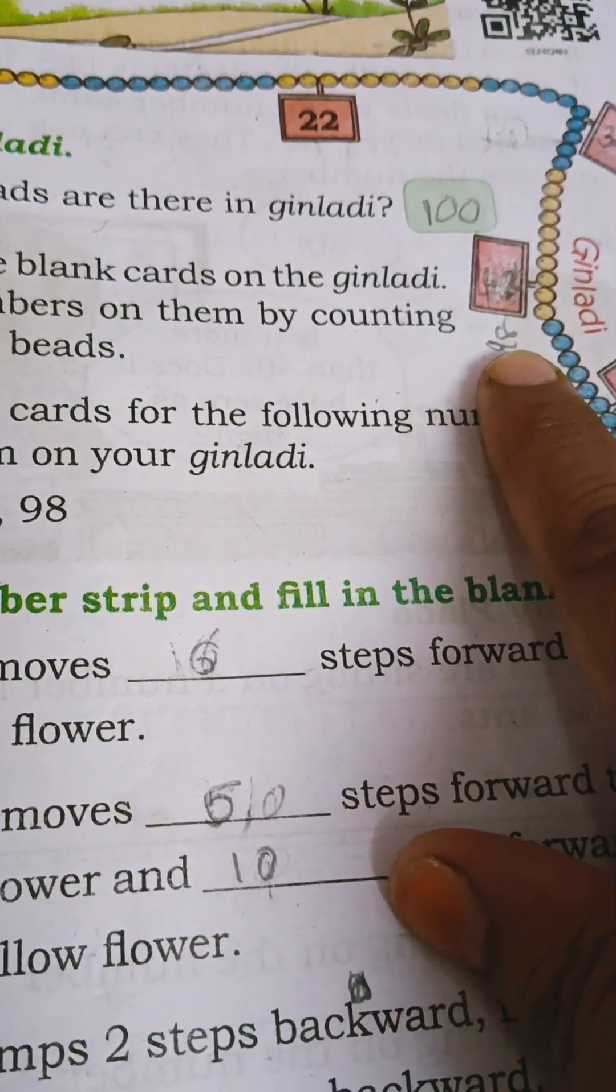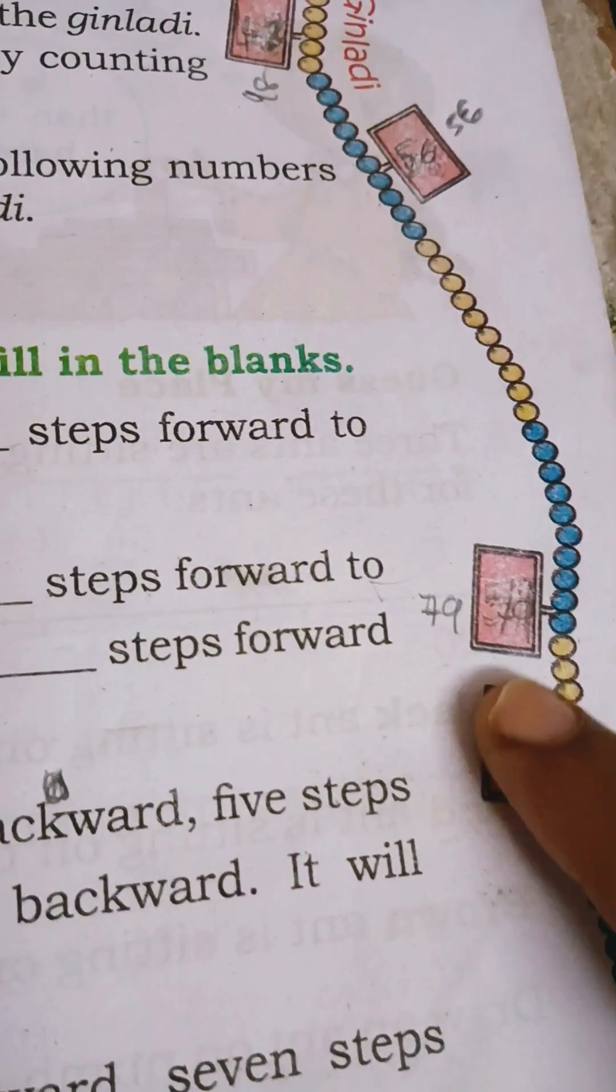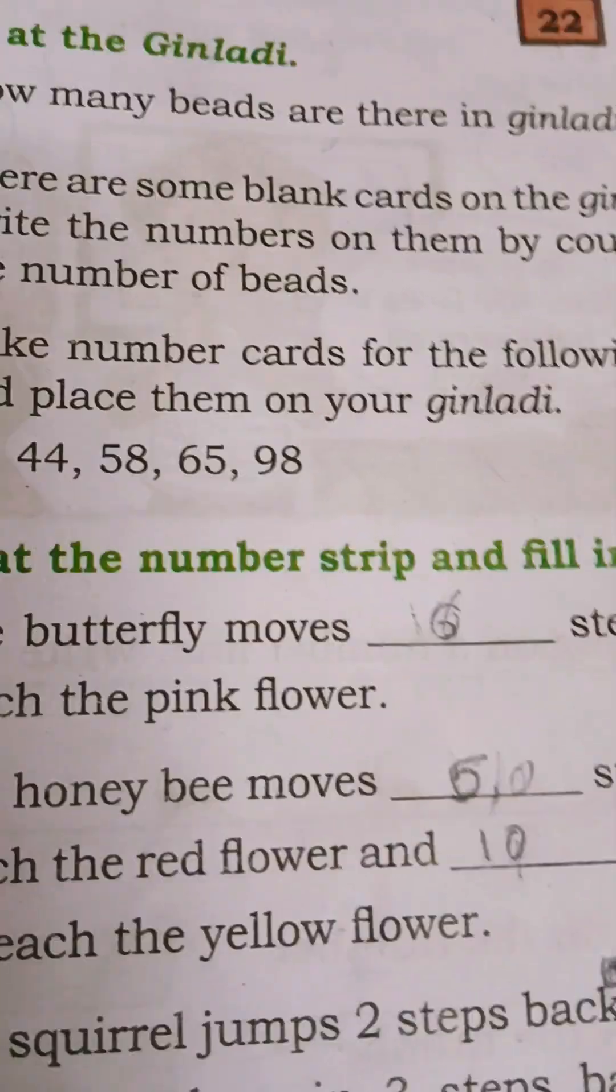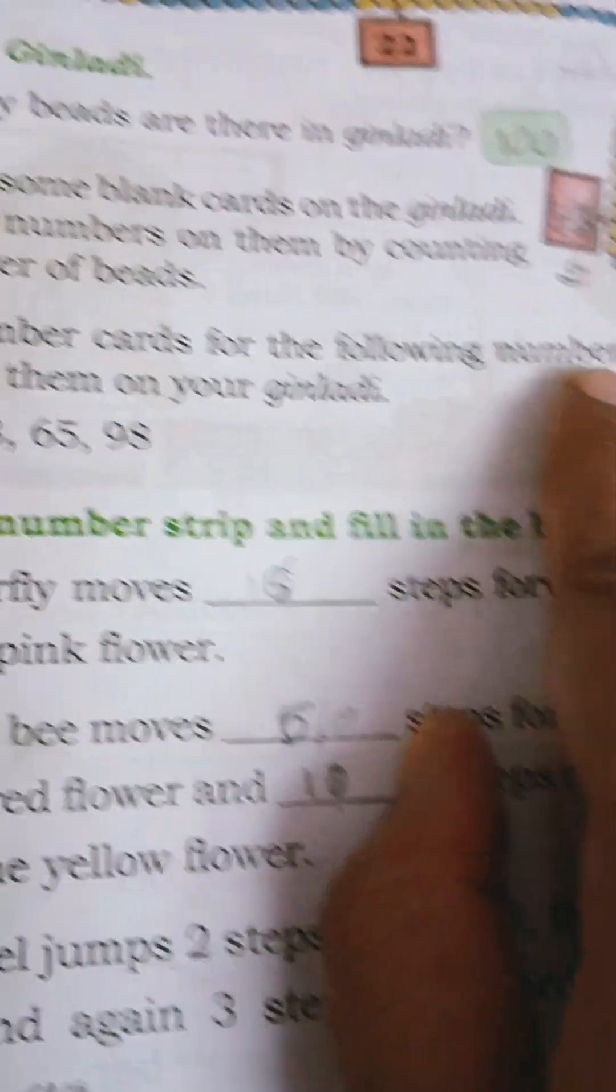Up to here, 48. Up to here, 56. Up to here, 79. Up to here, 85. Like that you have to count.